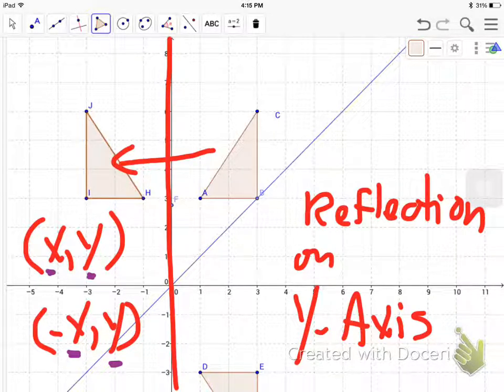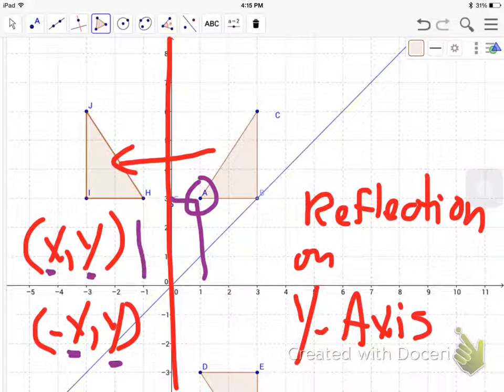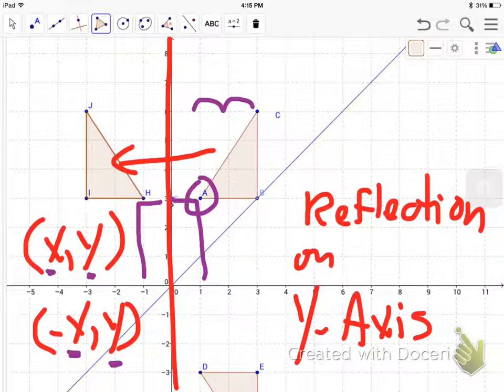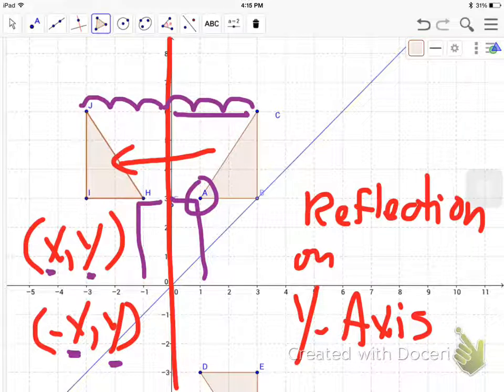So as you can see right here, point A is at (1, 3). That changes to (-1, 3). Or again, you can just count the amount of points it takes to get to the y-axis. So 3 points: 1, 2, 3. That's where your reflected point goes.